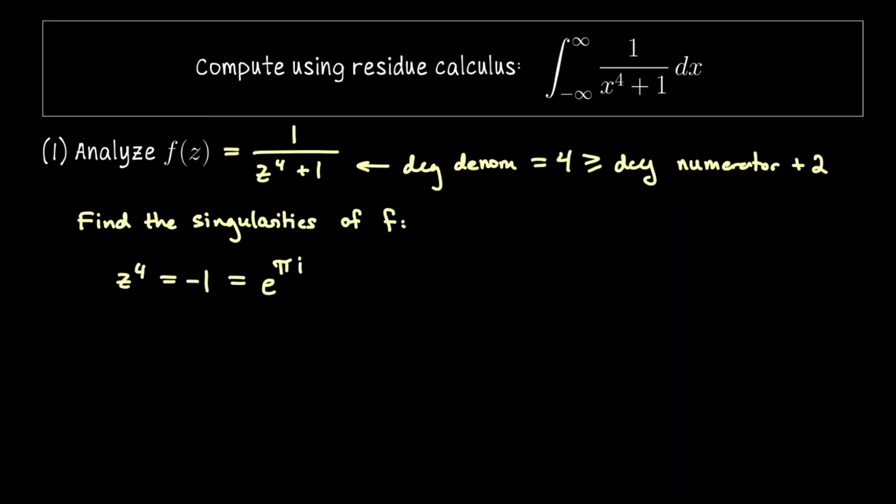But we could also get to that number if we did e to the pi i plus rotations by 2 pi radians. So let me indicate that with 2 pi i k where k indicates the number of rotations.